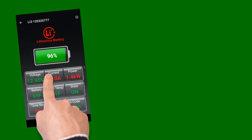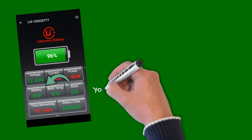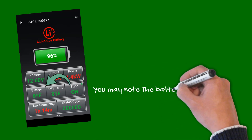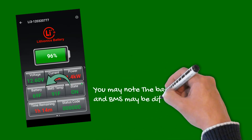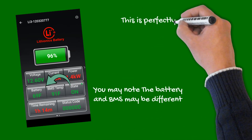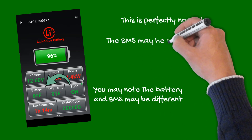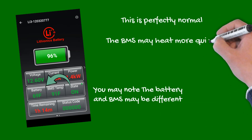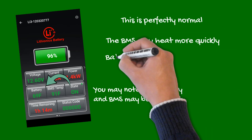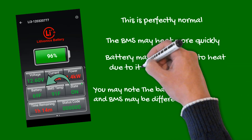Also note the battery's temperature and BMS temperature may be different at times. This is perfectly normal, as the BMS module may warm quickly under heavier loads. On the other hand, the battery itself takes longer to react to loads due to its large thermal mass.